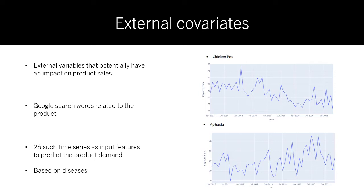Since we work on a dataset which consists of information about medical products, our keywords are related to these medical products, and they are actually diseases. These diseases are Google search words related to the product. We have utilized 25 search time series as input features to predict the product demand, and two of these input features are shown on this slide.